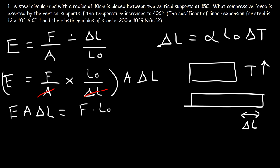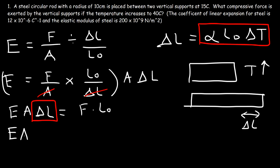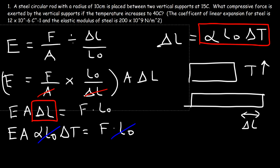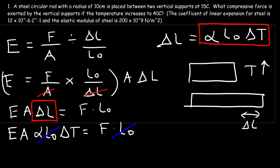Now I'm going to replace delta L with that expression. So this becomes E times A times alpha L₀ delta T, equal to F times L₀. We can cancel the initial length of the rod from both sides. So now we have the equation to calculate the compressive force: F equals E times A times alpha times delta T.